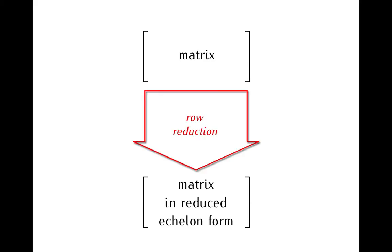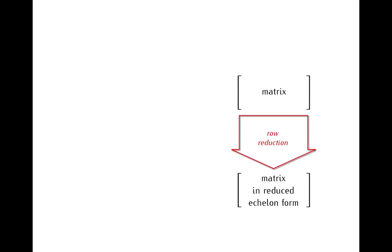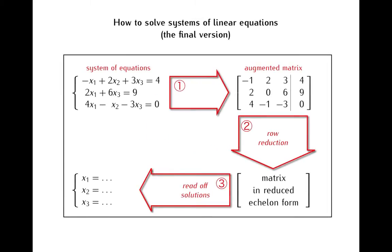Now row reduction was the last element that we needed to complete this diagram, which shows how we can solve systems of linear equations, so this diagram is now finally complete.